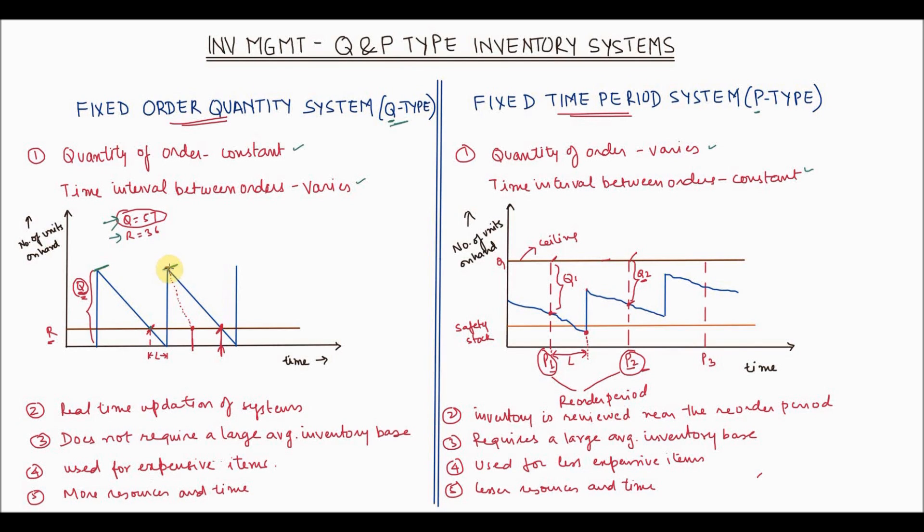Now one thing to note here is that the fixed order quantity system has this Q fixed, but the time period is not fixed. Depending on the demand, if the demand is more in a certain period, then your reorder point can be hit much sooner. And then again the order will be placed. So the period varies whereas the quantity keeps being constant.